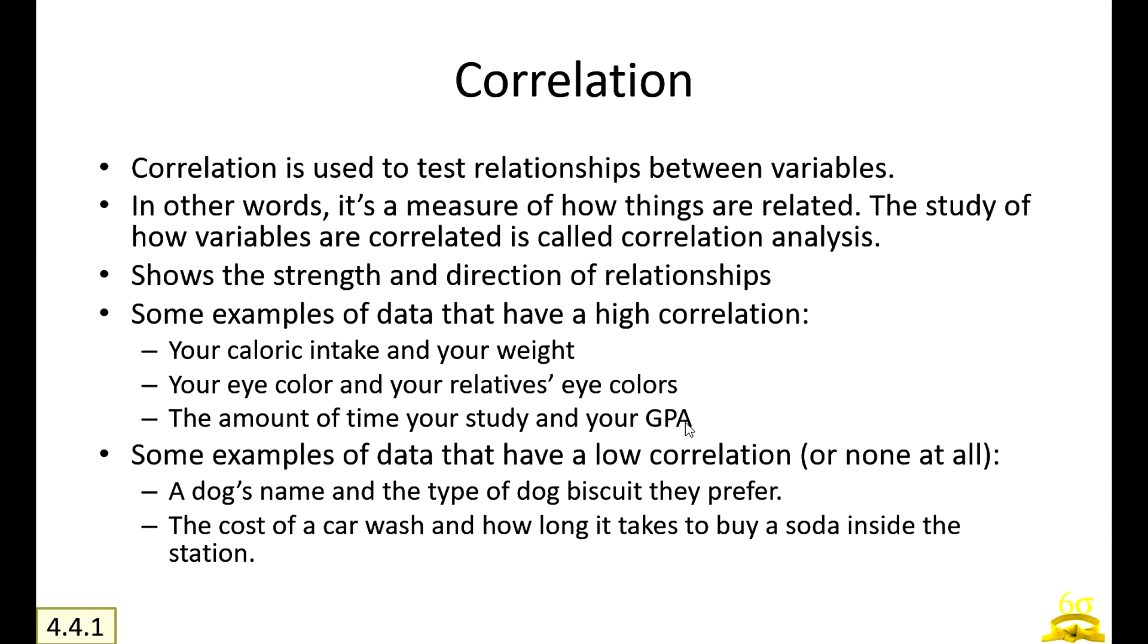Some examples which we deal with every day: if you take high calories, your weight increases, so that is a very highly correlated data. Your eye color and your relative's eye colors may be the same. The amount of time you study and the final GPA you get in the exam is also very highly correlated. But for example, a dog's name and the type of dog biscuit they prefer doesn't have any correlation. The cost of a car wash and how long it takes to buy soda inside the station does not have any correlation at all.